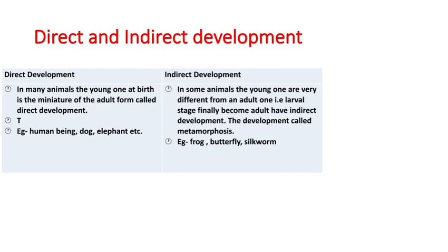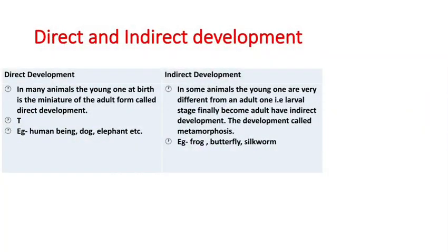There are two patterns of development: direct and indirect. In direct development, the young one at birth is a miniature of the adult form — meaning when young ones are born, they resemble their parents. For example, just like us: the babies born are essentially similar to their father or mother. Their body does not undergo major further changes — it is not the case that first one arm appears and the other develops later. The young ones are miniature adults.